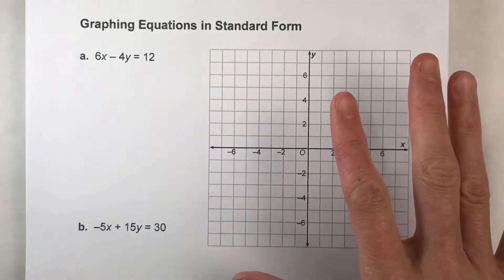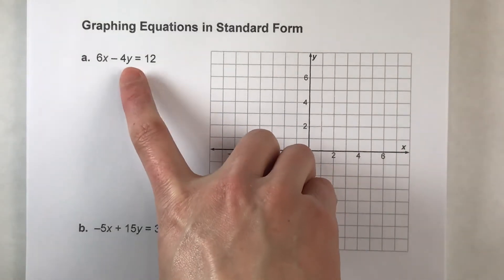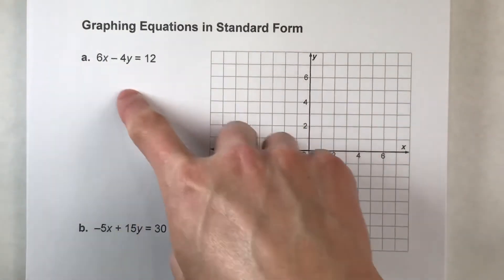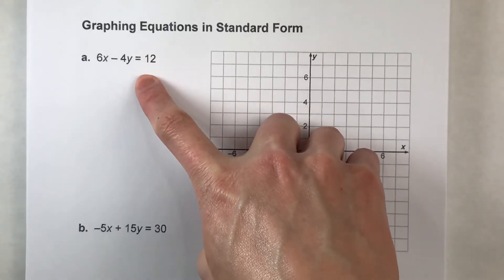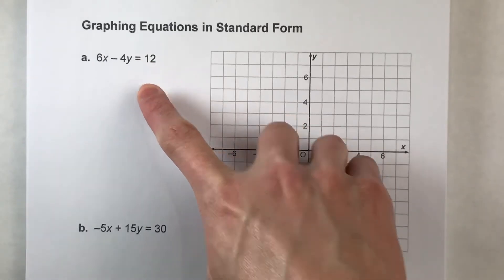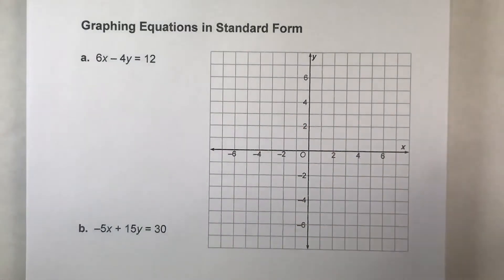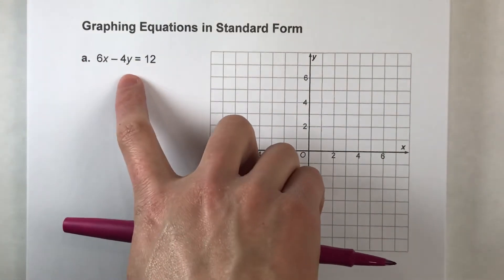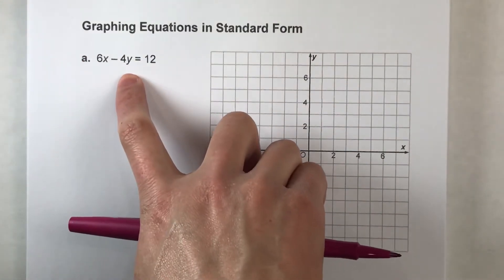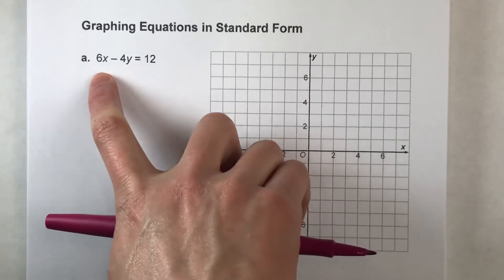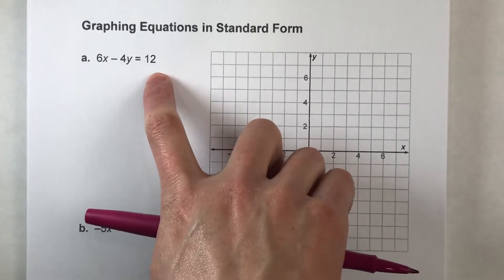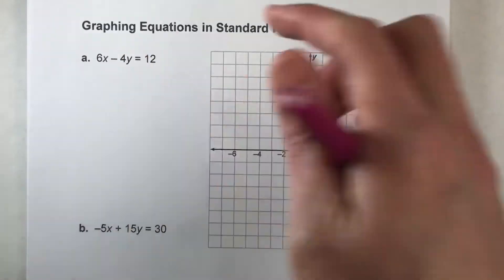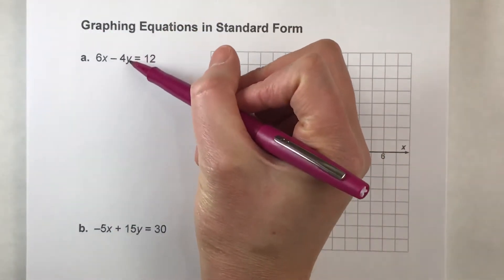Let me show you the slightly harder way first. One way to do this is to use algebra to get this into slope-intercept form. And since we know slope-intercept form has a y equals, we need to get this side to have y by itself. So we're going to solve this algebra equation to get y alone on the left side of the equal sign.